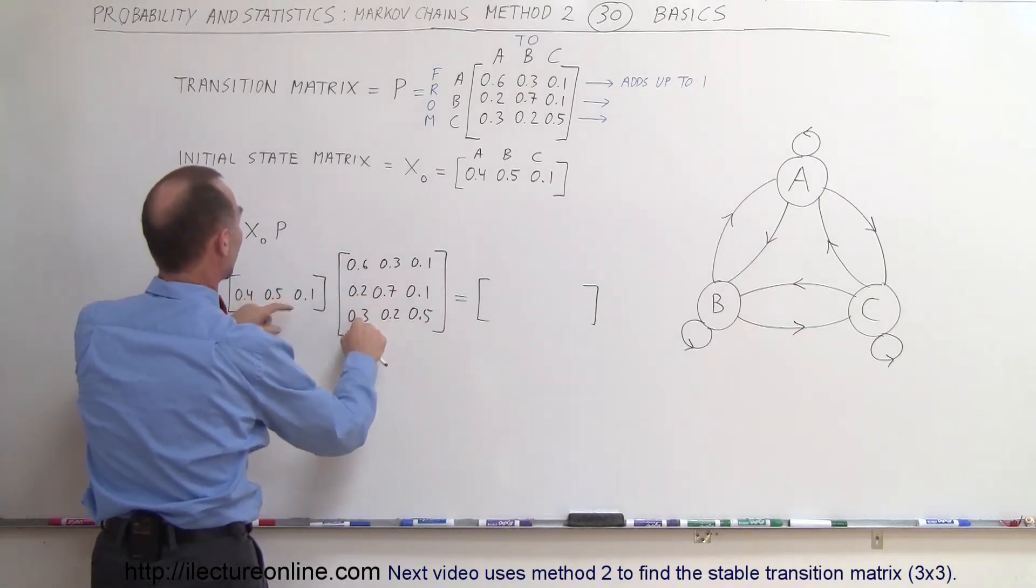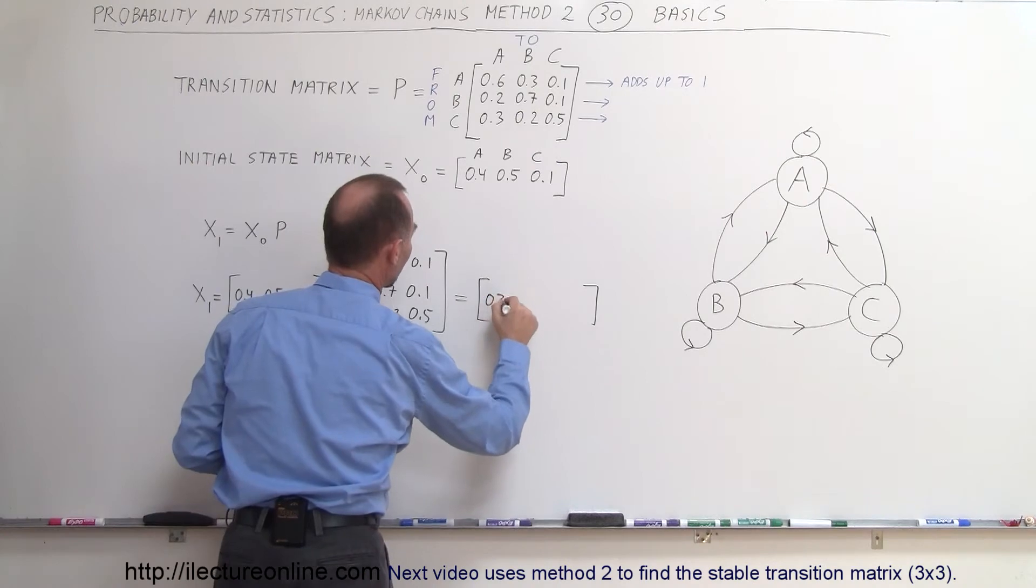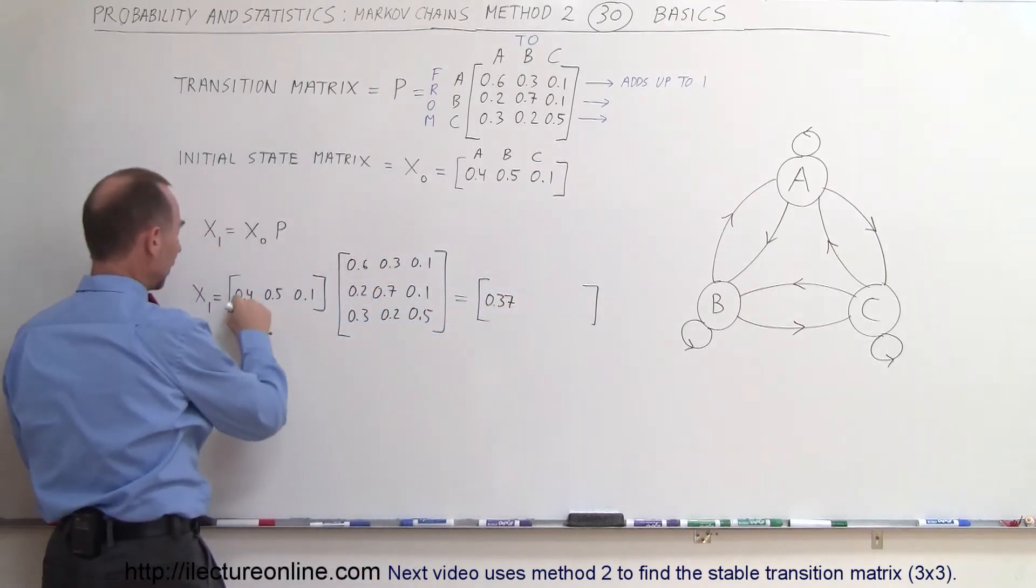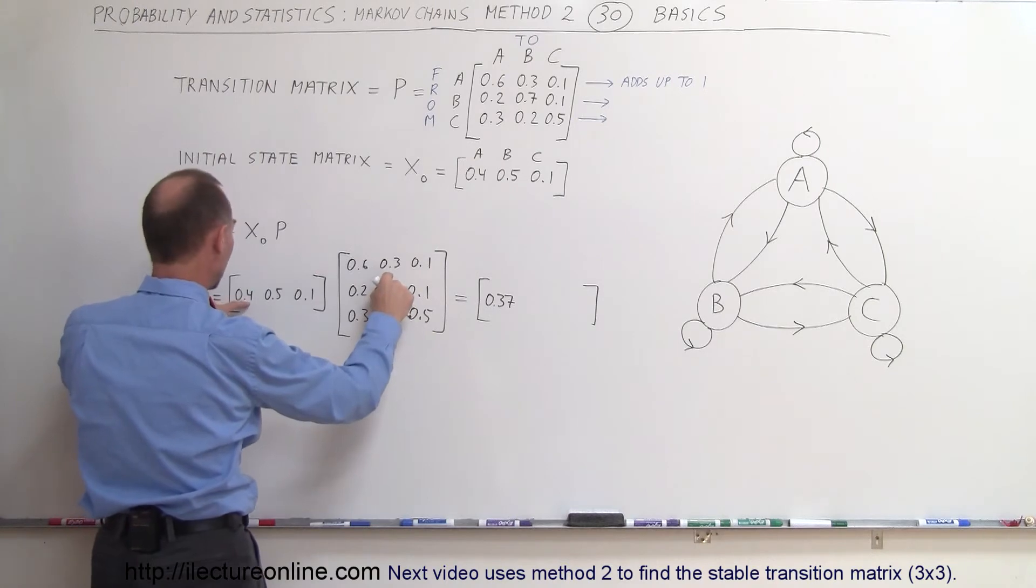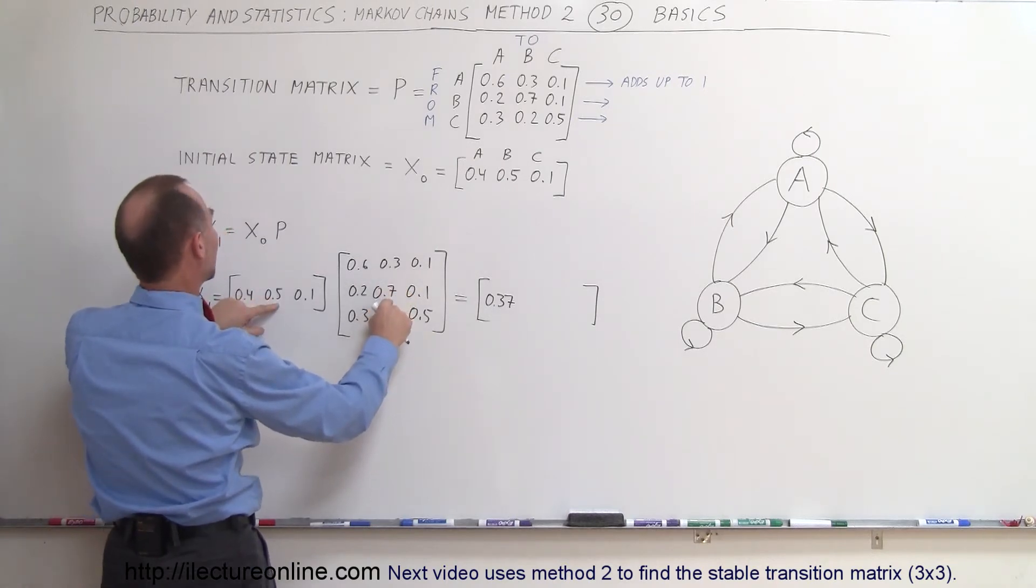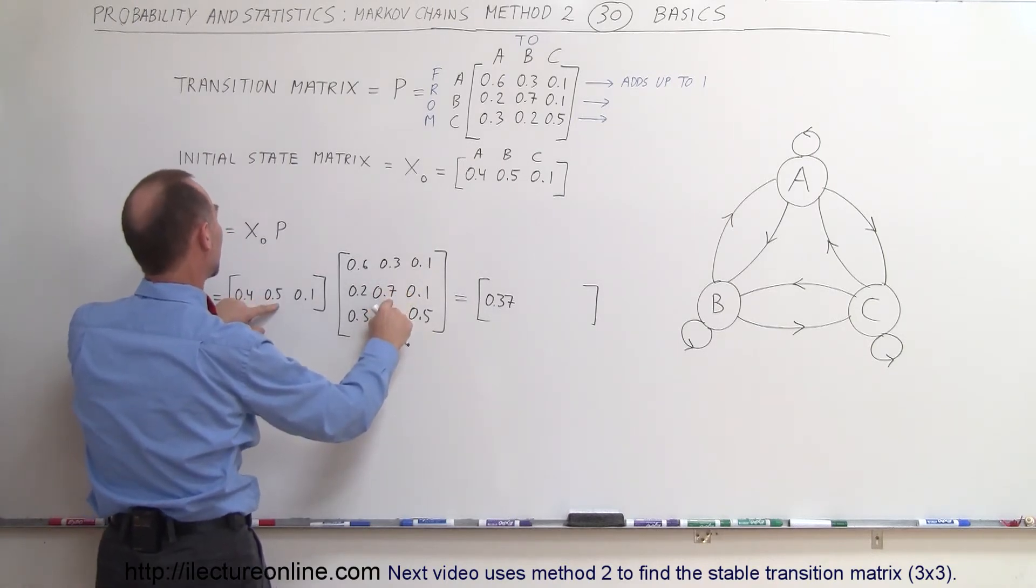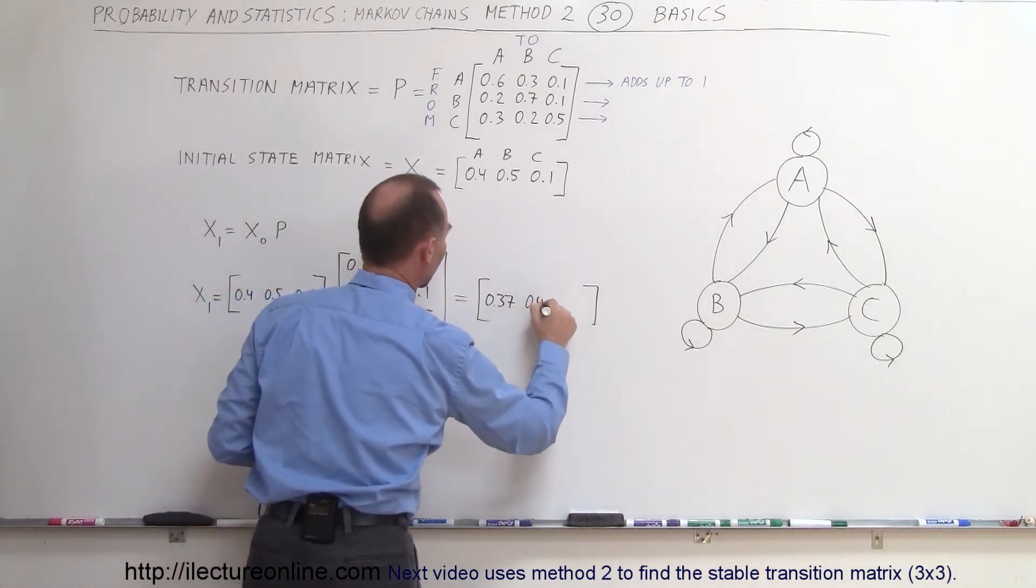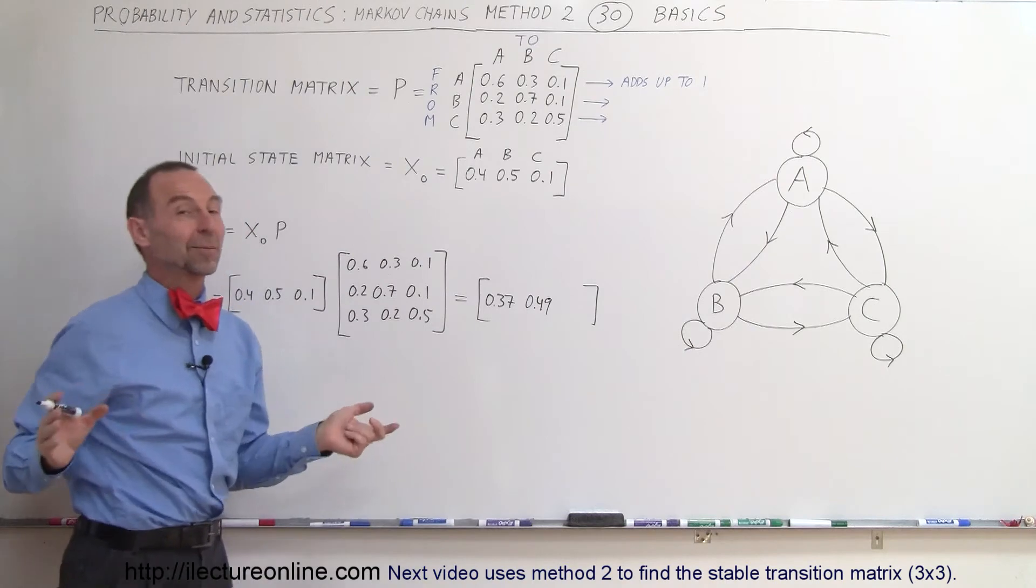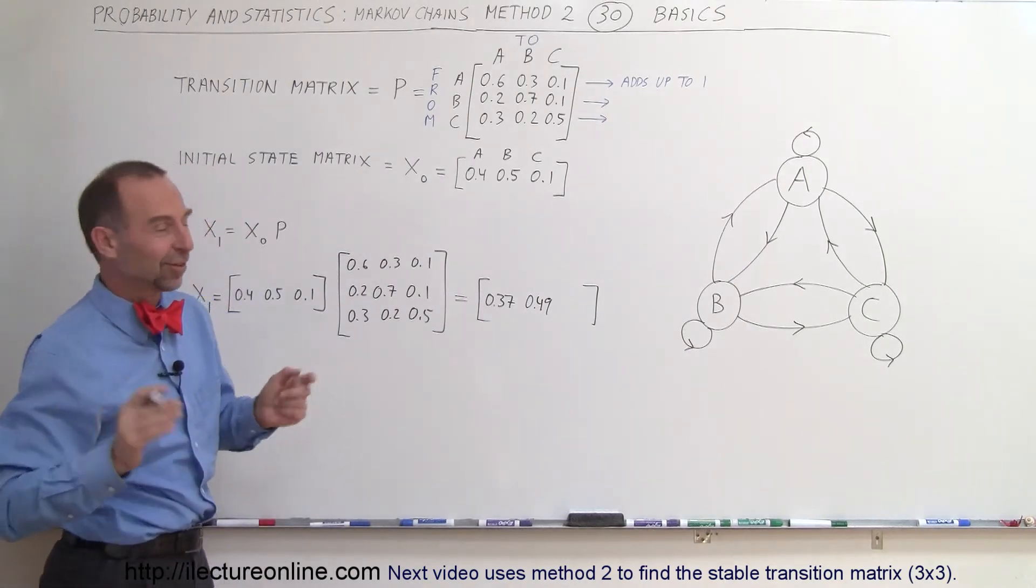Now we multiply these three elements times this column right here so that would be 0.12 that would be 0.35 that would be 0.47 0.49 so that would be 0.49 and again if I make a mistake the numbers will not add up to 1 so that's an easy way to check it.